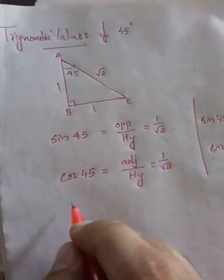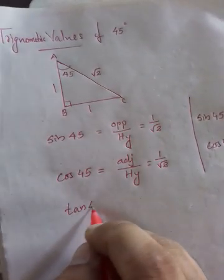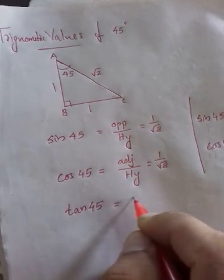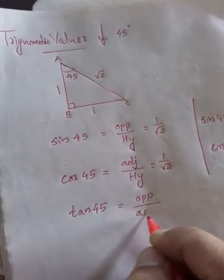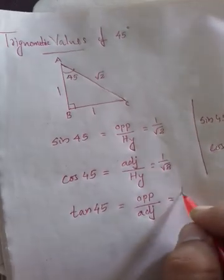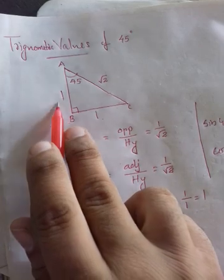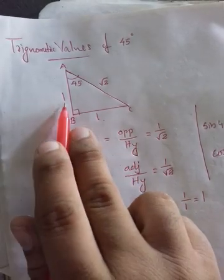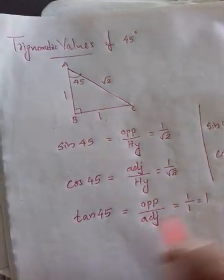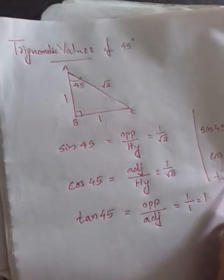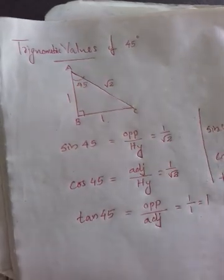The last, tan 45. That is opposite by adjacent, 1 by 1, which is 1. So tan 45 is 1.